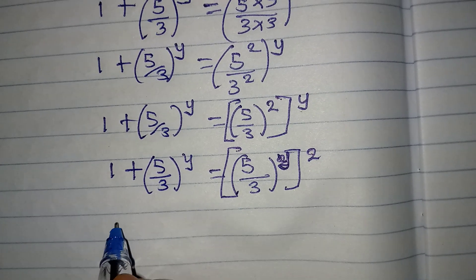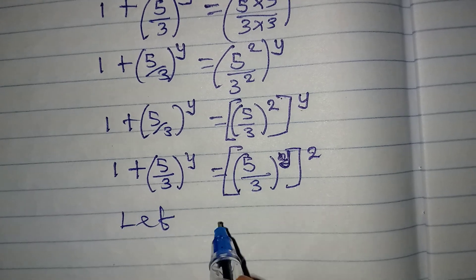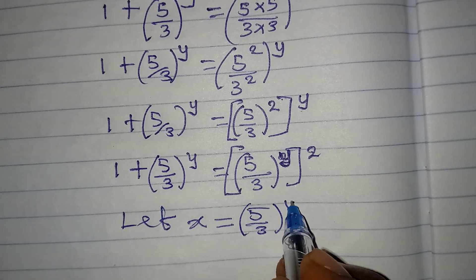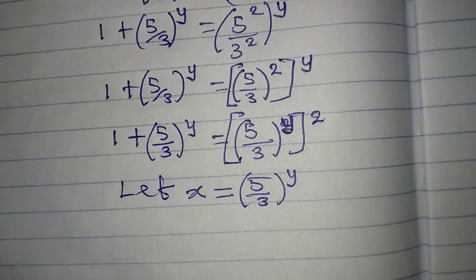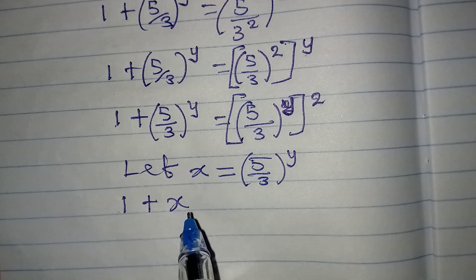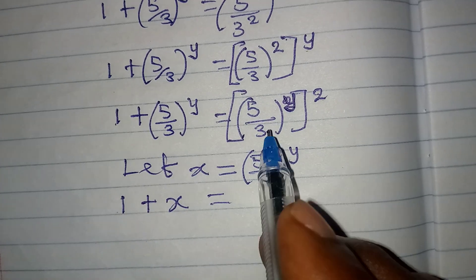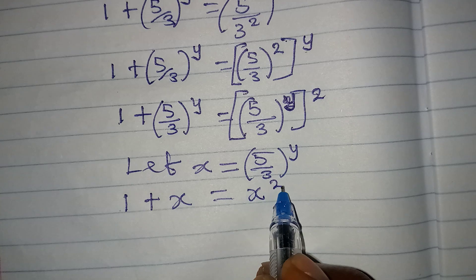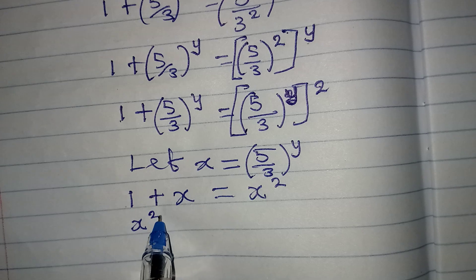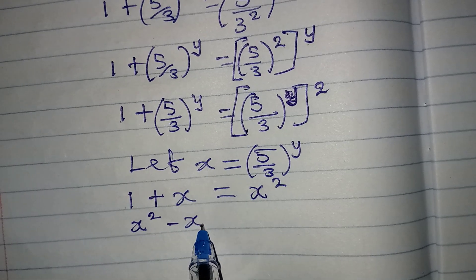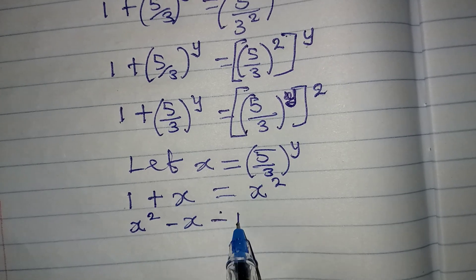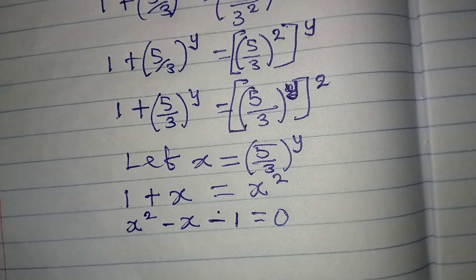Now let x equal (5 over 3) to the power of y. Substituting, 1 plus x equals x squared. Rearranging, we get x squared minus x minus 1 equals zero. This is a quadratic equation.